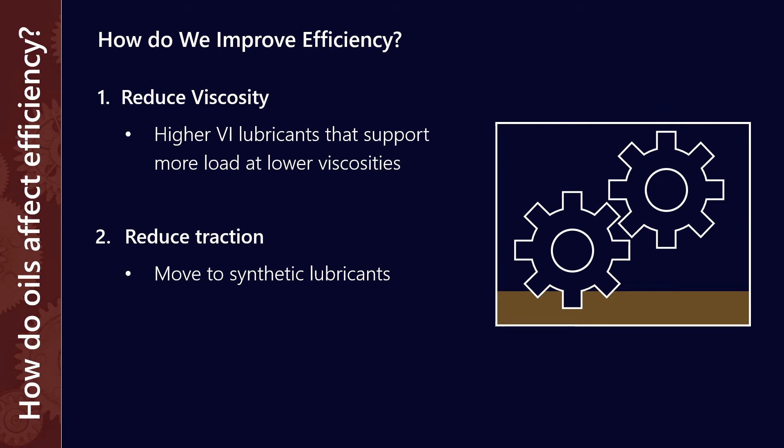So how do we improve energy efficiency? Really, we only have two levers. The first is to reduce the viscosity of the lubricant. Higher VI lubricants can actually support more load at lower viscosities. As an example, if you were using a standard mineral 320 weight gear oil, often you might be able to reduce that down to a 220 weight by going to a synthetic PAO.